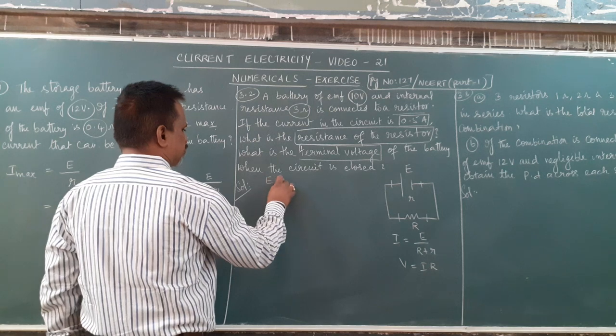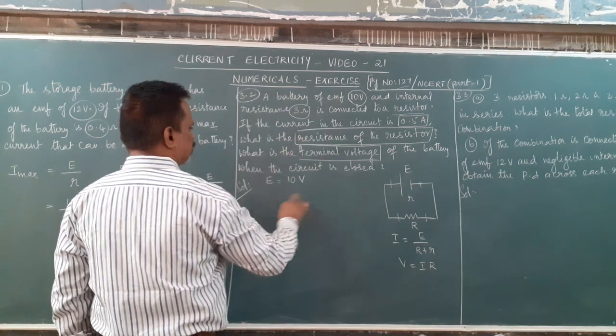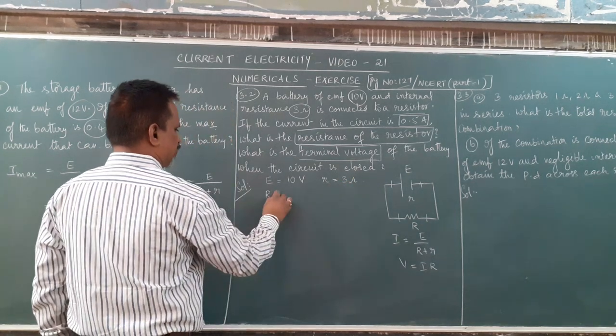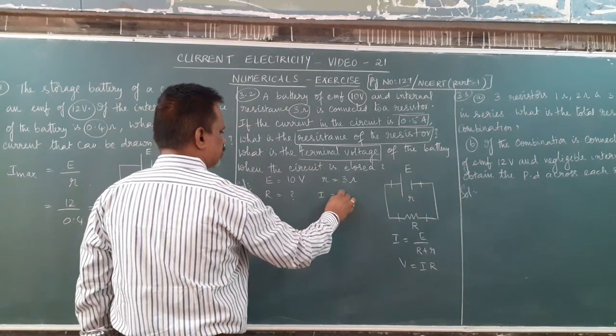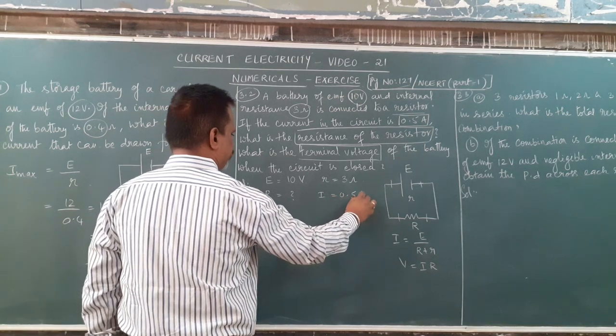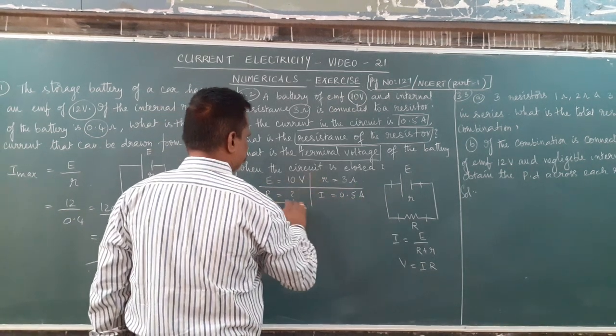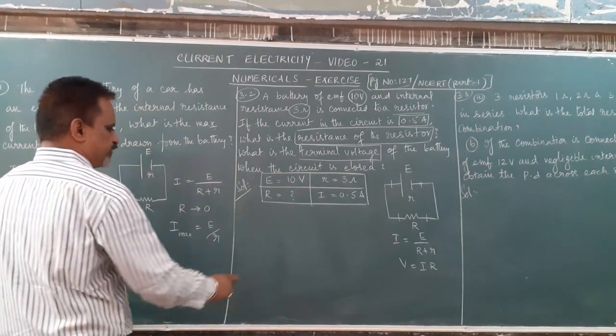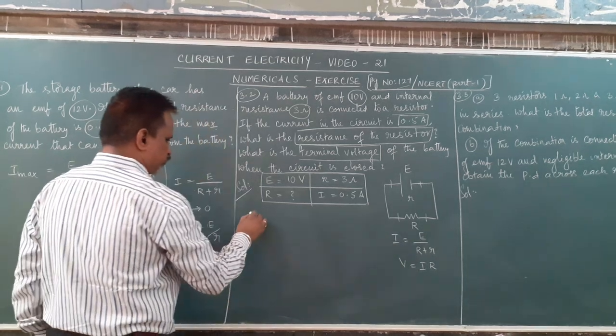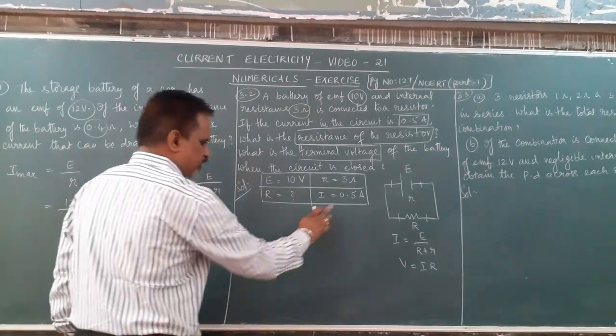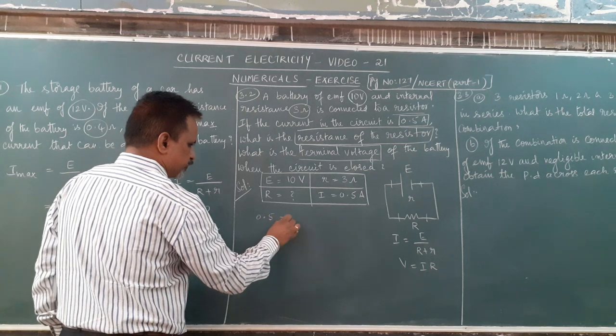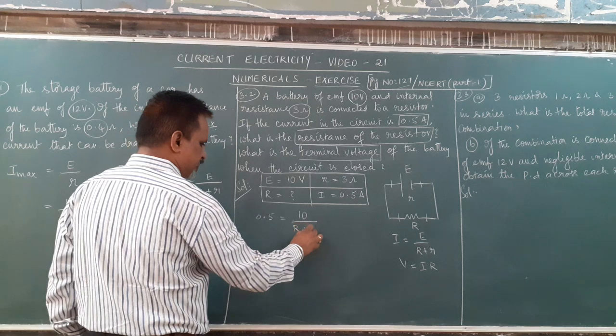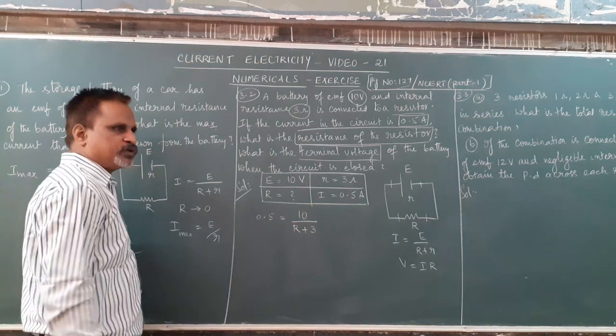Let's first obtain the data given. Small r is 3 ohm, capital R is not given, current is 0.5 ampere, and E is 10 volt. I take the formula I equal to E by R plus r. 0.5 is equal to 10 by R plus 3.